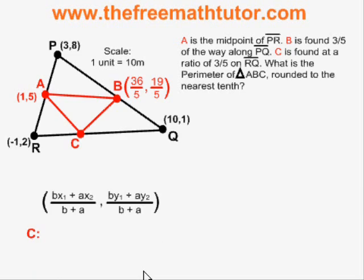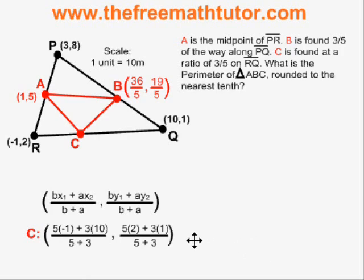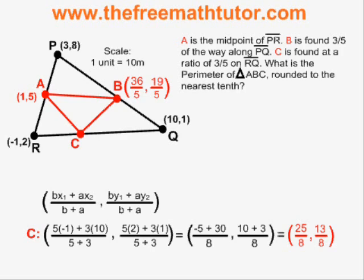and plugging in the coordinates of vertices R and Q, the simplification looks like this. I end up finding that the x and y-coordinates of point C are 25/8 and 13/8. I label my drawing accordingly.